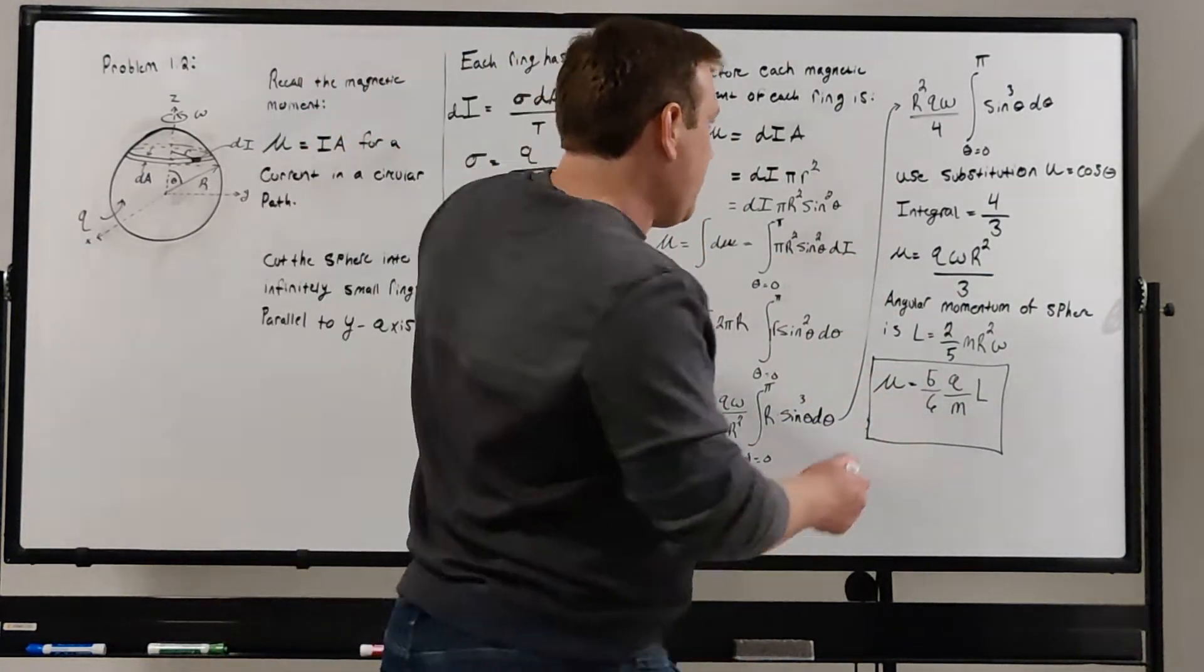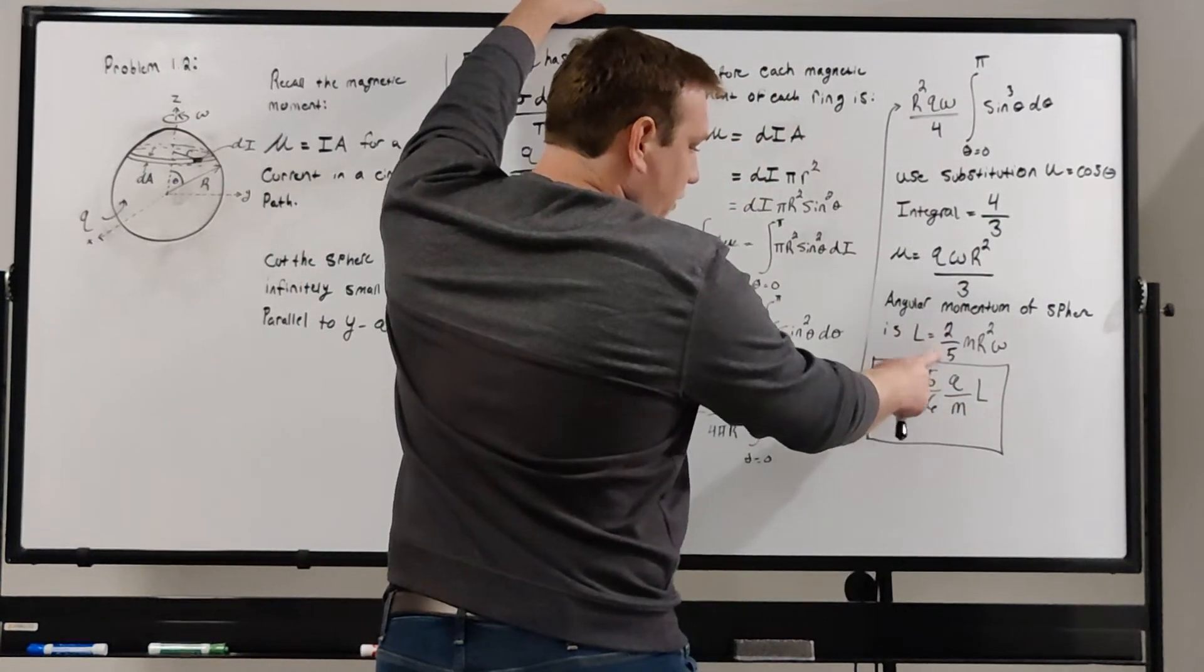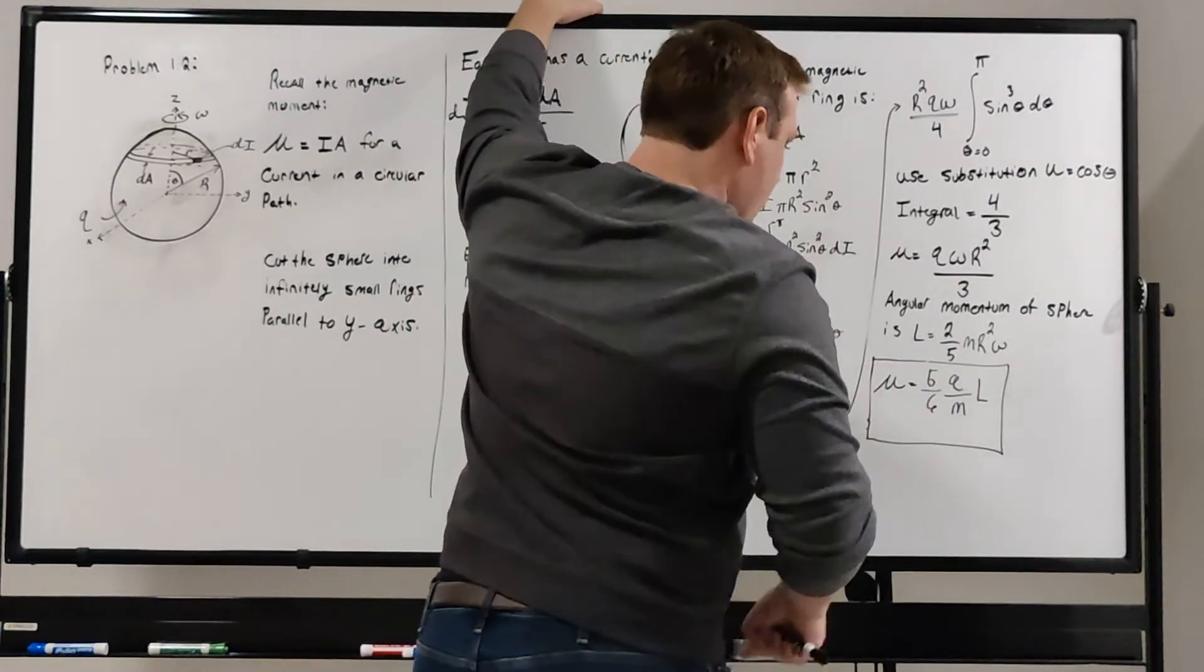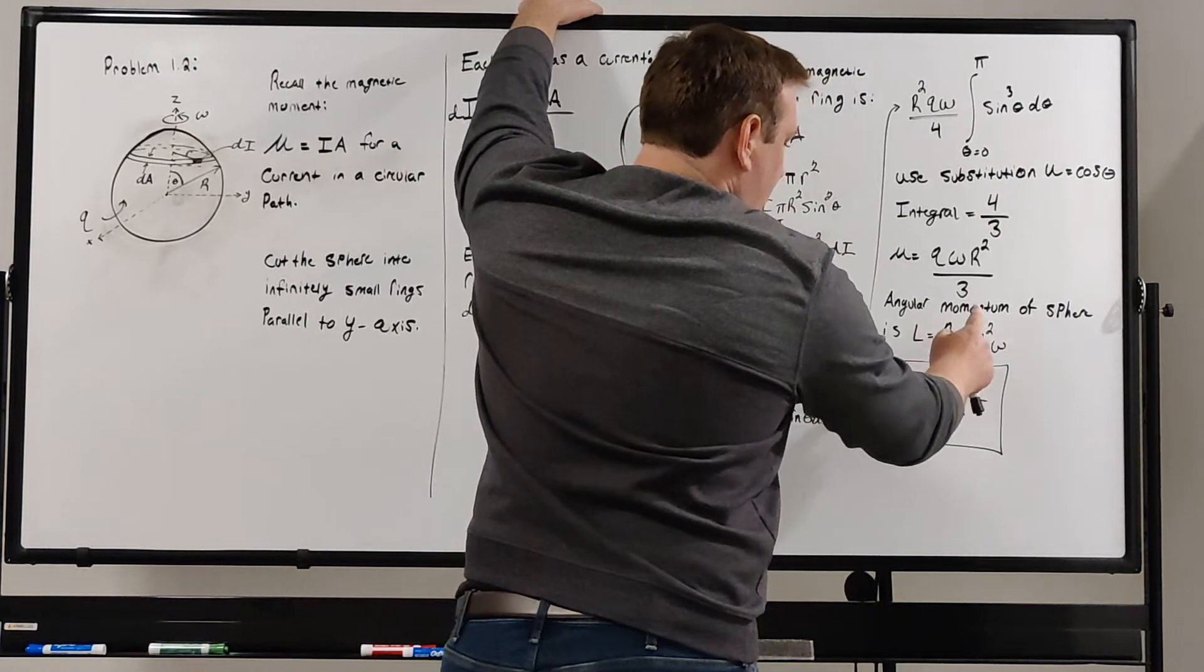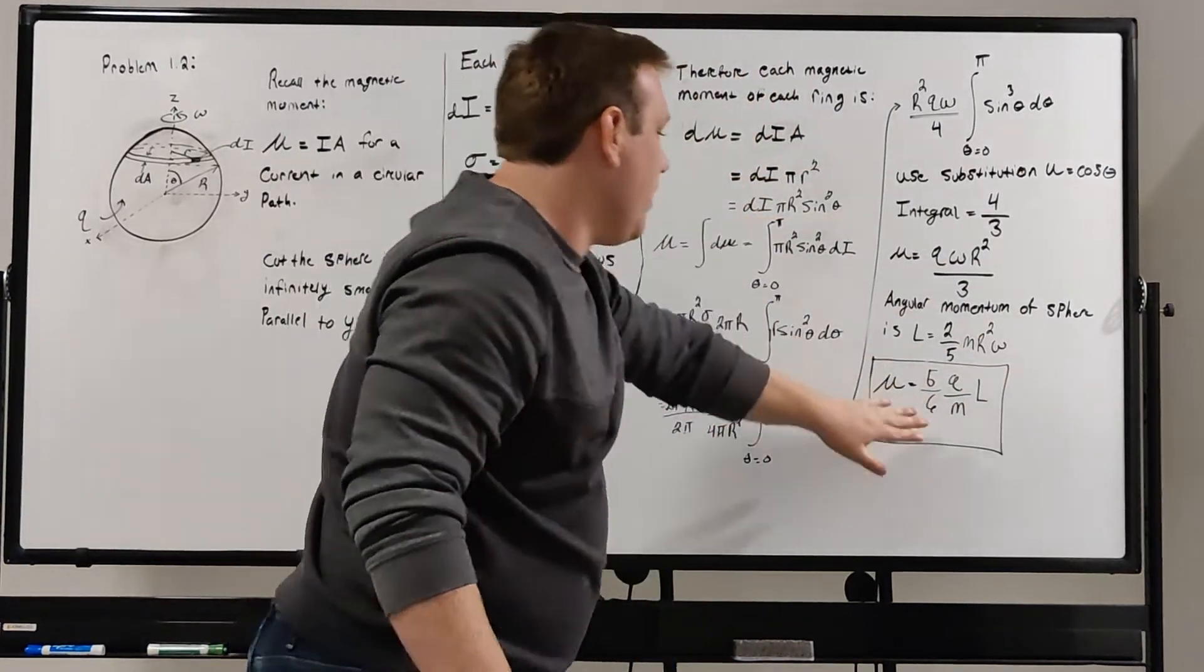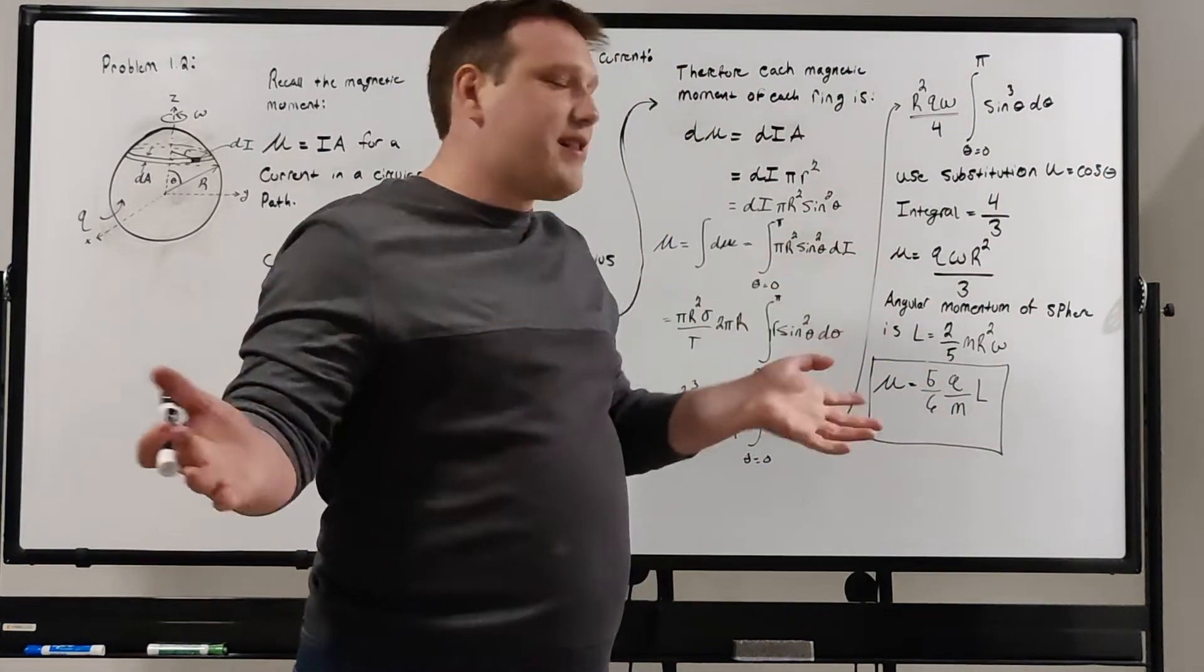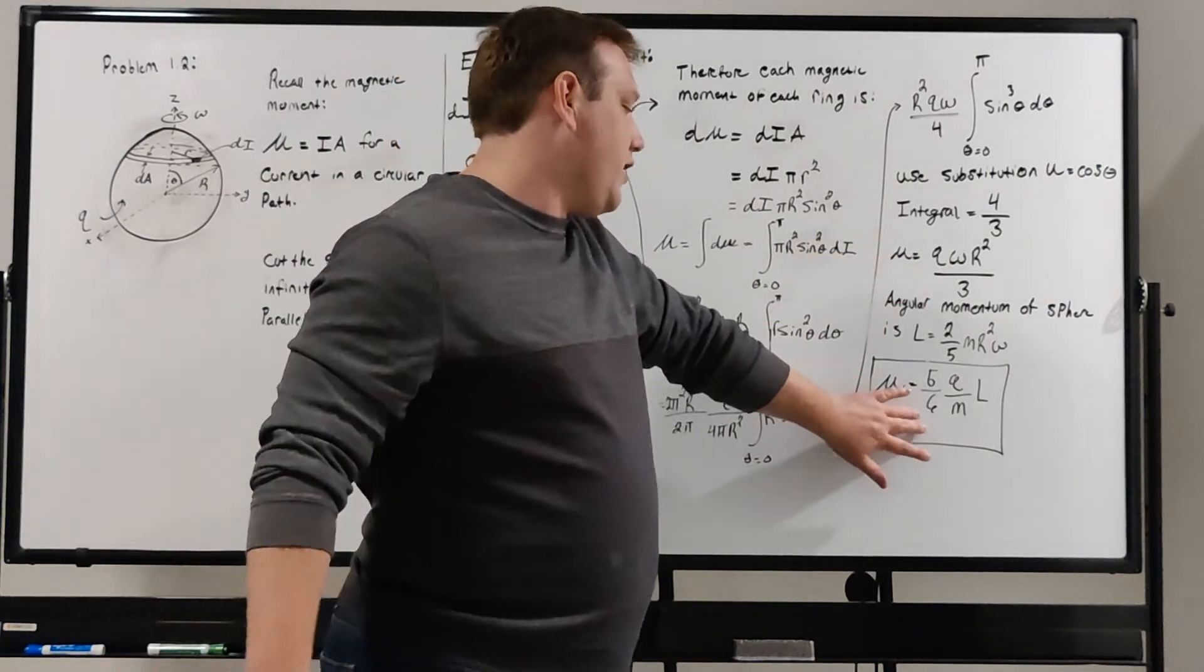For example, take the angular momentum, multiply it by 5. That would cancel the 5. Divide this by 6, you'd get 1 third, which is what we have up here. Multiply by Q and divide by M. So multiply Q and divide by M, that would be 1 third QR squared, and then we have the angular momentum. If you just take L, multiply it by this stuff, you will see that you get what we have here. And that's how you do the basic check to show that our answer here is correct and that this relation holds true.